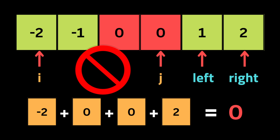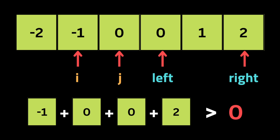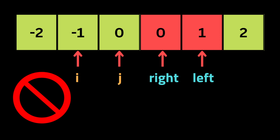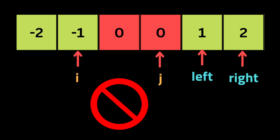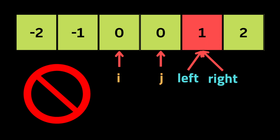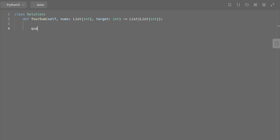If we have already checked a value, we don't need to process it again — meaning if the current value equals the previous value, we skip to the next iteration. Here we don't need to loop until the end of the list because we need four numbers. We check if the sum equals the target, push it to the quadruplets array, and move the pointers. If the outer index equals the previous value, we skip it. When the sum is bigger than the target and the pointers meet, we stop and return the result.